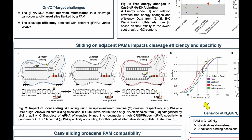Instead, when Cas9 binds to a downstream PAM, we don't expect this sliding to happen — at least not with the same rate. When Cas9 binds to a downstream PAM, the guide RNA can bind to the DNA fully and there will be a DNA bulge, but all bases of the guide RNA are occupied binding to the DNA. Therefore, there is no complementarity benefit in sliding upstream, at least not the same benefit as in the case of sliding downstream.